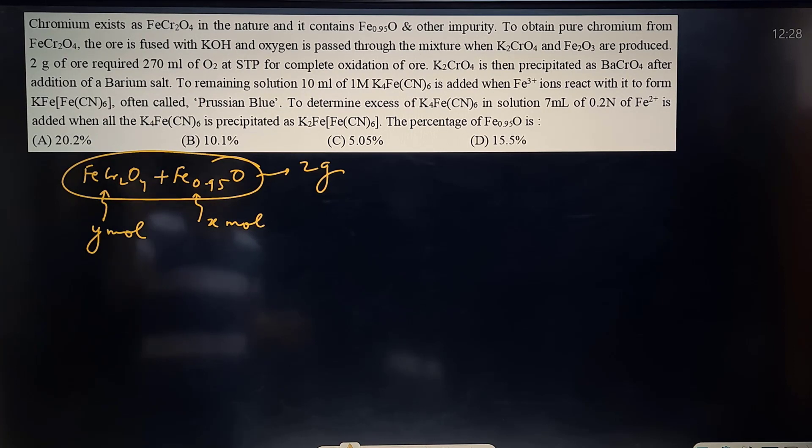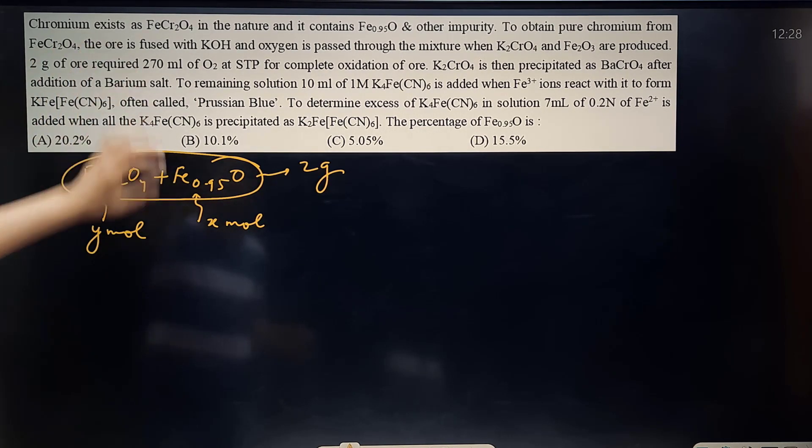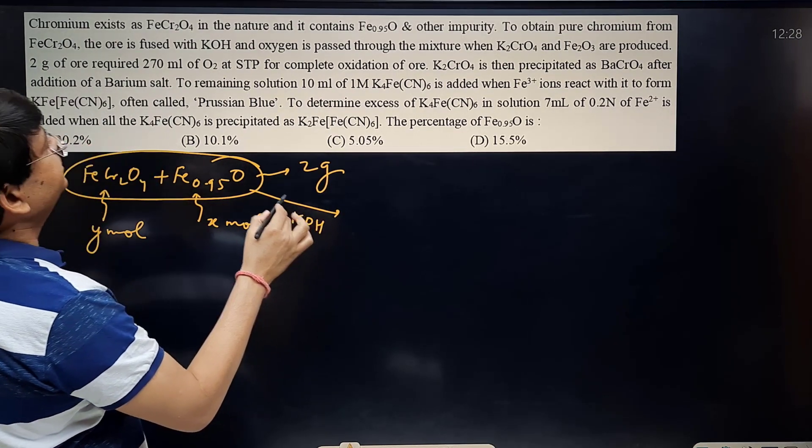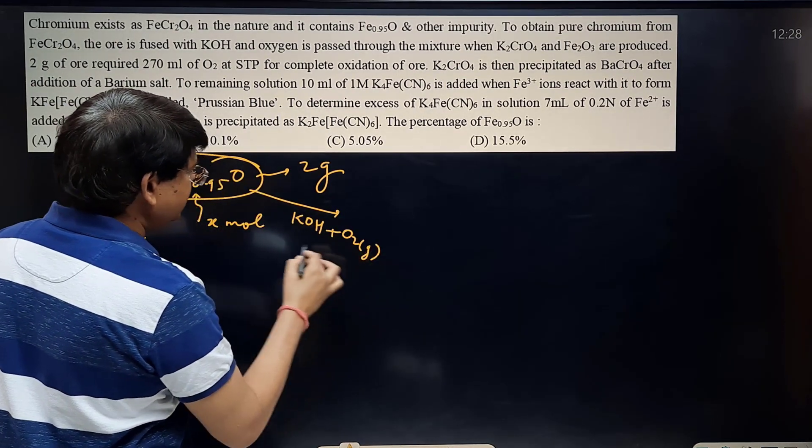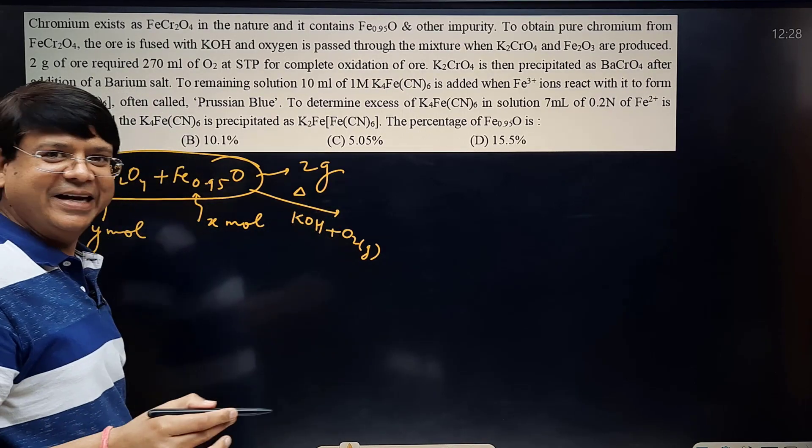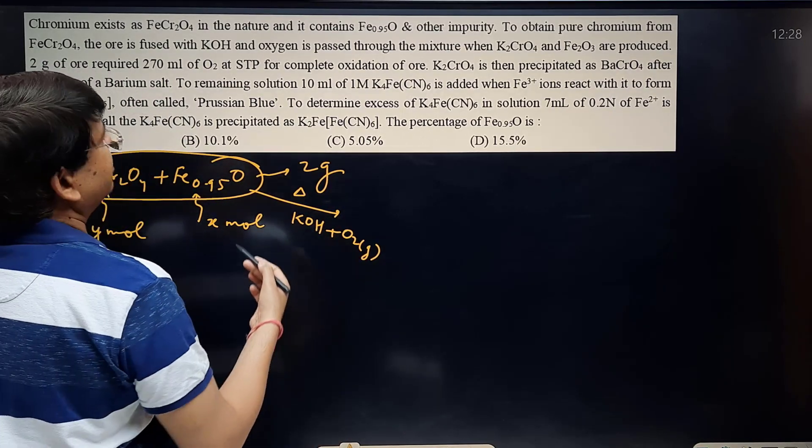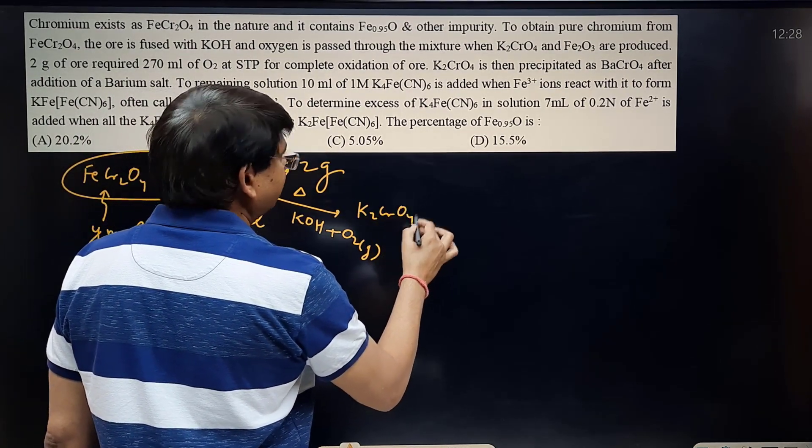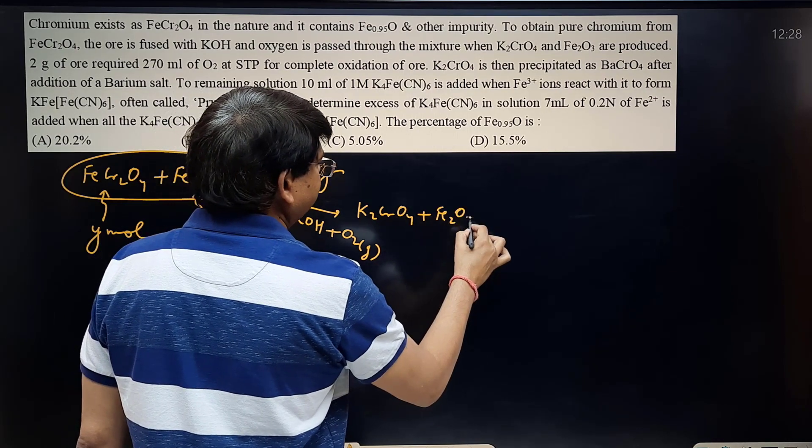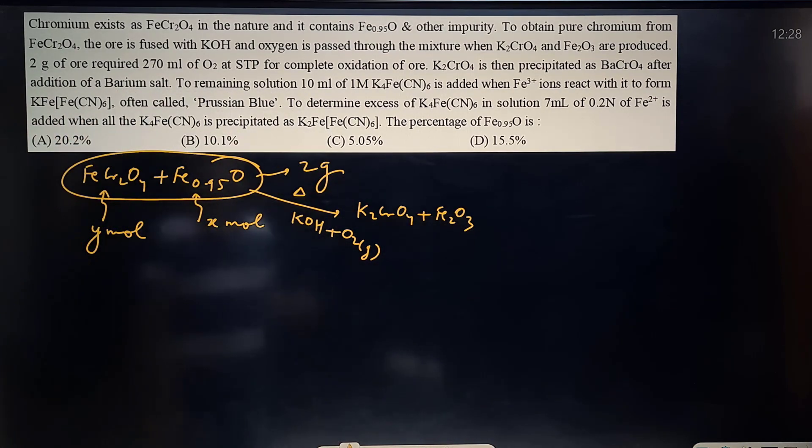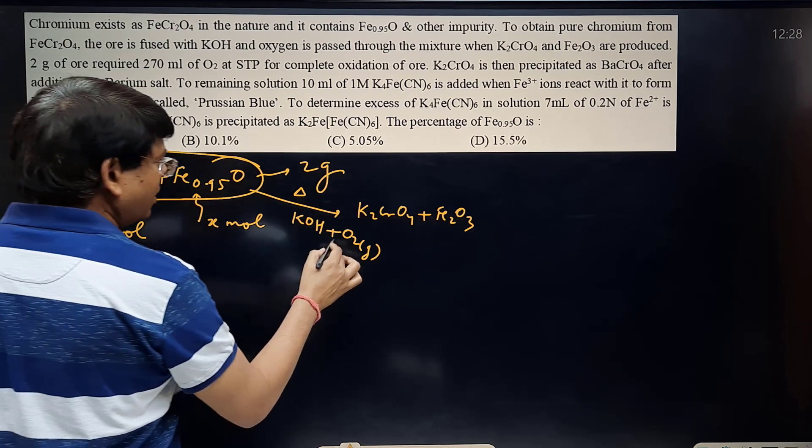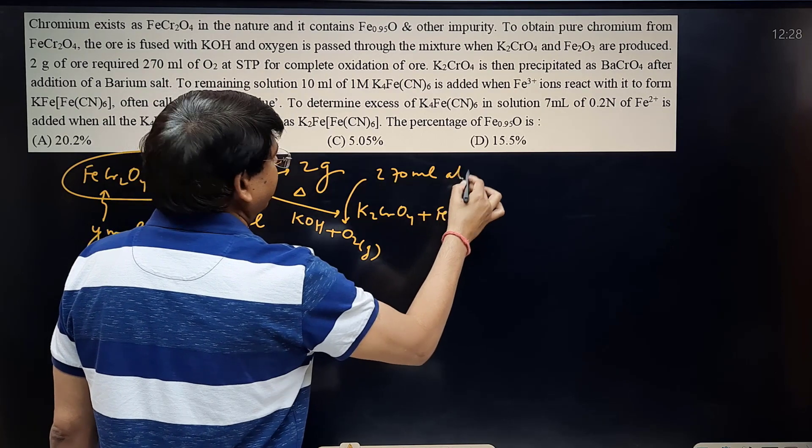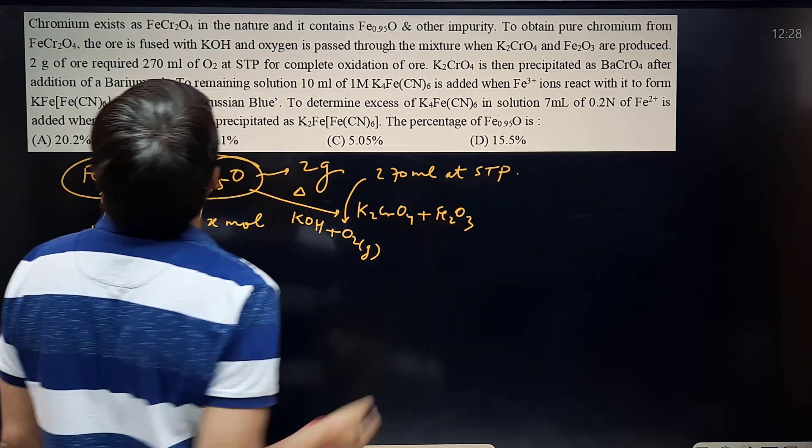To obtain the pure chromium from FeCr2O4, the ore is fused with KOH and O2 gas. Of course it is fused, heated to the melted temperature, and this converts chromium into K2CrO4 plus Fe2O3. 2 grams of the ore required 270 ml of O2 consumed at STP condition.